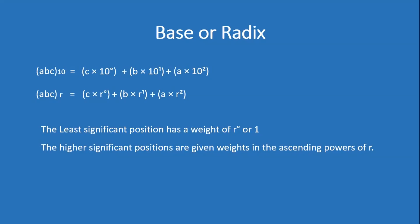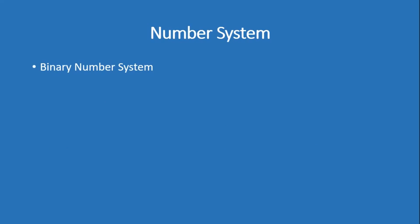Now we move to the number system types. As already mentioned, there are many types of number systems. The first one is the binary number system. In the binary number system, there are two unique digits, so the base is 2. The digits range from 0 to R minus 1, and here R is 2, so the unique digits are 0 and 1. An example is 100110 base 2 — you can see that only digits 0 and 1 are used.